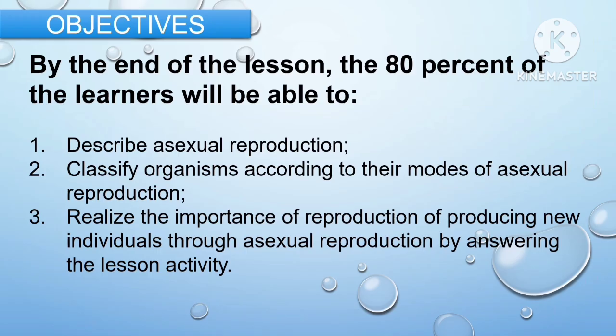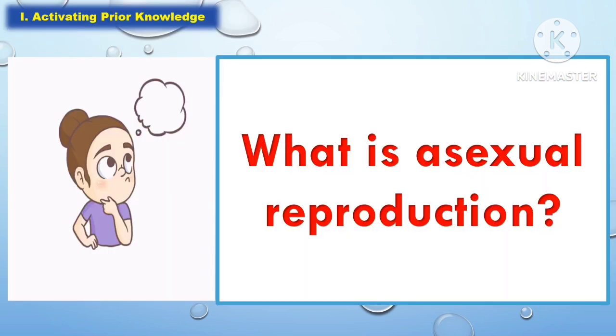For the objectives, by the end of the lesson, 80% of the learners will be able to: first, describe what is asexual reproduction; second, classify organisms according to their modes of asexual reproduction; and third, realize the importance of reproduction in producing new individuals through asexual reproduction by answering the lesson activity.